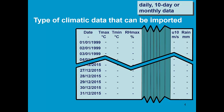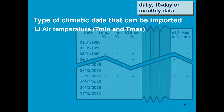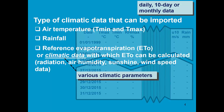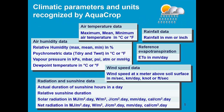The type of climatic data that can be imported is air temperature data — minimum and maximum — rainfall data, and reference evapotranspiration data, or climatic data with which ET0 can be calculated, such as radiation data, air humidity, sunshine, and wind speed data. AquaCrop recognizes various climatic parameters and units in which the climatic data can be expressed. Here we see the parameters and units which are recognized by AquaCrop.